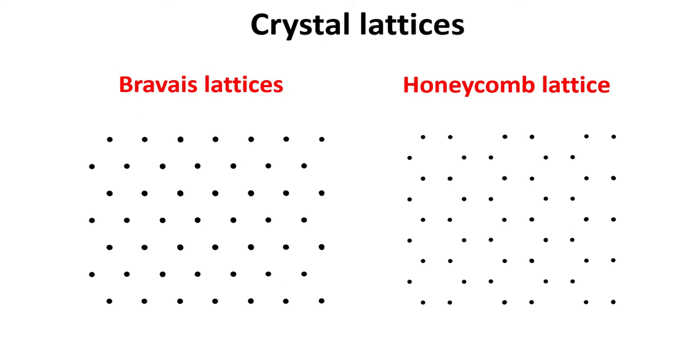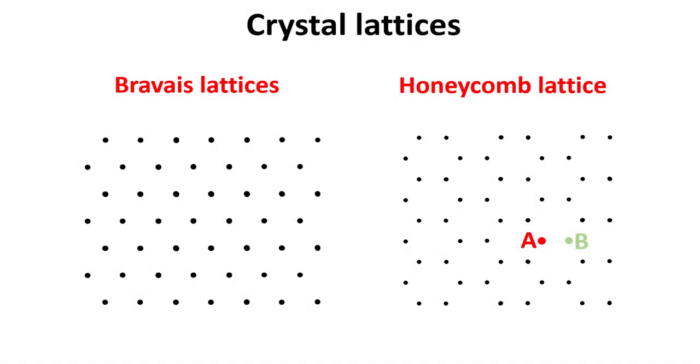The honeycomb lattice is an example of periodic array of points that does not constitute a Bravais lattice. For example, the vicinity of lattice points A and B of the honeycomb lattice looks different. The A point has two neighboring points to the left and one to the right while point B has two neighboring points to the right and one to the left.